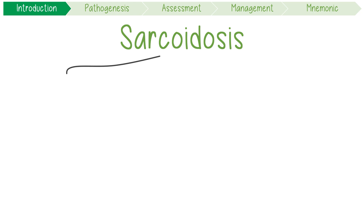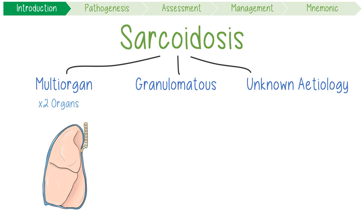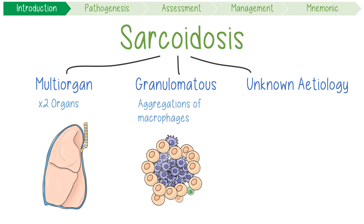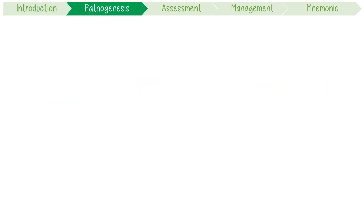Sarcoidosis is a chronic multi-organ granulomatous disorder of unknown etiology — it affects at least two organs. 90% of the time one of those is pulmonary. It's characterized by granulomas, which are clumpy aggregations of macrophages and other white cells, and its cause isn't really known.